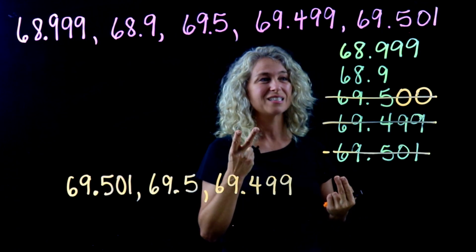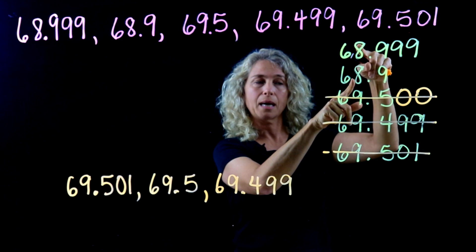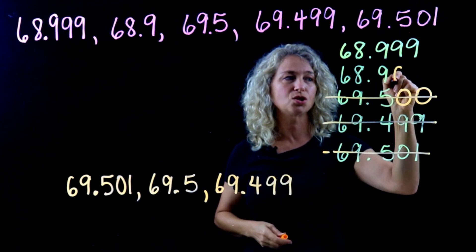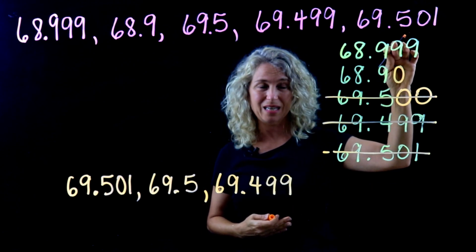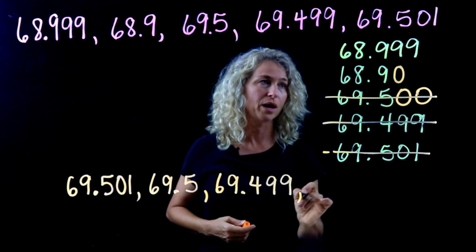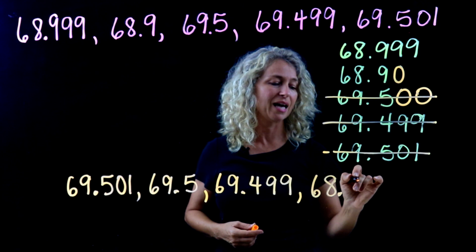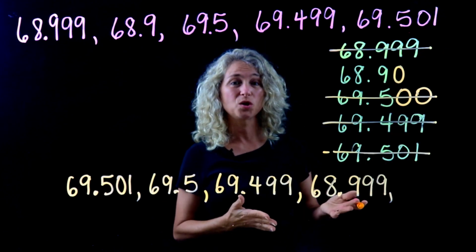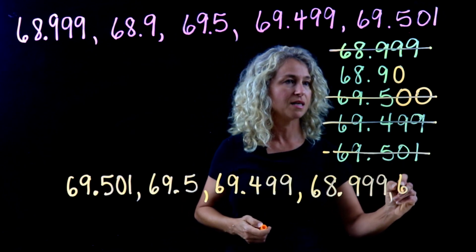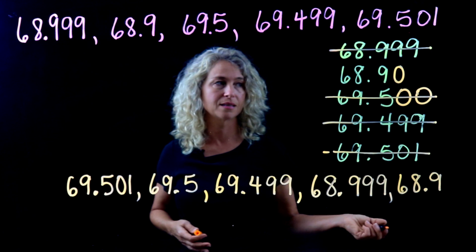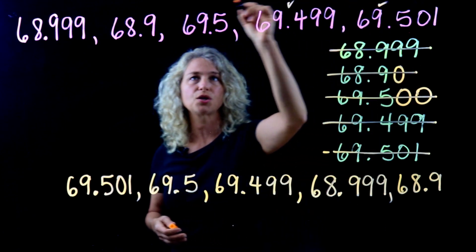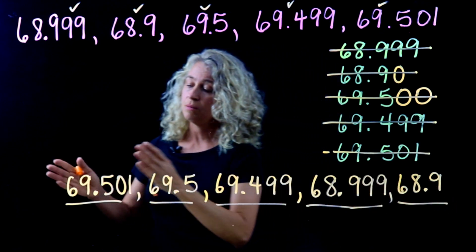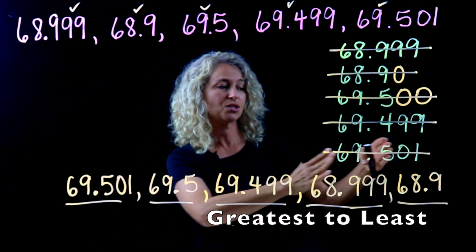Now we're left with two numbers: sixty-eight and sixty-eight. Move to the tenths place — nine and nine, the same. Move to the hundredths place: nine compared to nothing, which is zero. Nine is greater, so sixty-eight and nine hundred ninety-nine thousandths goes next. Cross it off. The last and least value is sixty-eight and nine tenths. Check: one, two, three, four, five numbers ordered from greatest to least — matching the question asked.